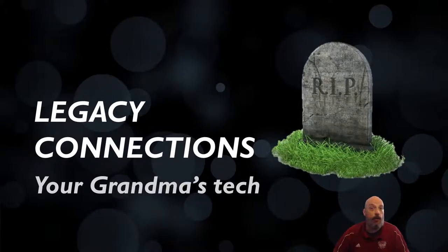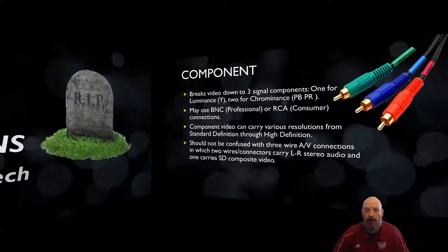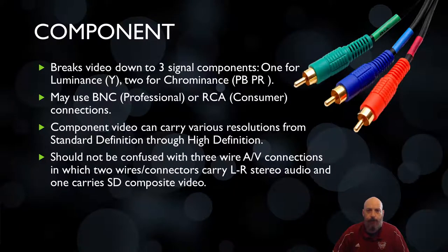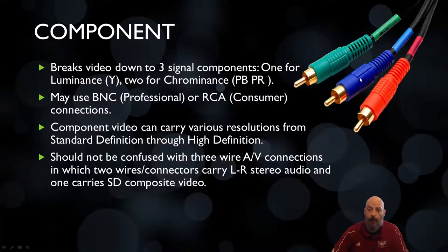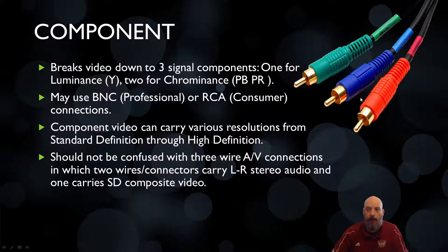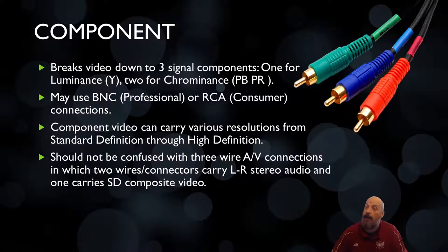Many connectors have been replaced by newer types. When home consumer media was evolving, the first connector was composite, which fit all video for a signal into a single cable. Some people wanted better quality, so they broke the video into three cables using the colors of the light spectrum — red, green, and blue — an RGB component connector. Instead of all signals sharing a third of bandwidth in one cable, each component channel got three times the bandwidth of a composite.